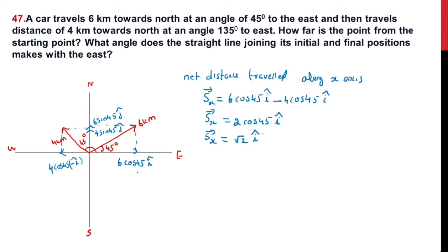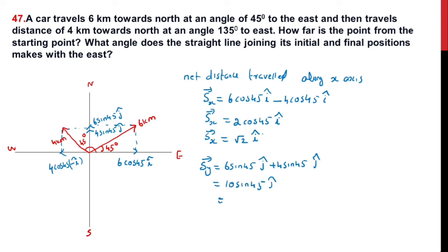For the y-component, both vectors act in the same direction, so we simply add them: Sy = 6 sin 45 (j-cap) + 4 sin 45 (j-cap) = 10 sin 45 (j-cap) = 10 × (1/√2) = 5√2 j-cap.